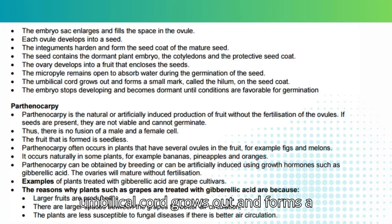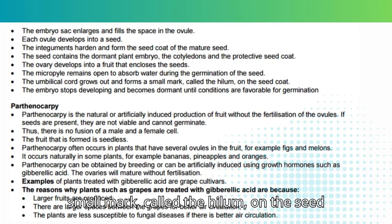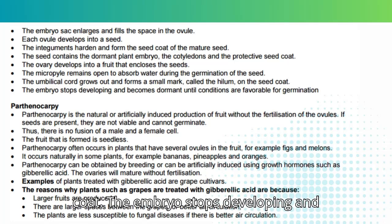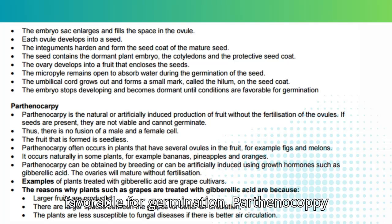The umbilical cord grows out and forms a small mark called the hilum on the seed coat. The embryo stops developing and becomes dormant until conditions are favorable for germination.